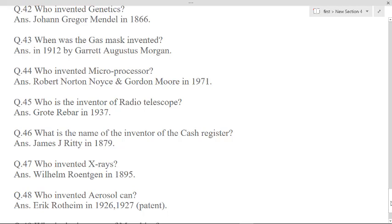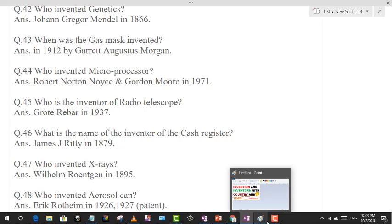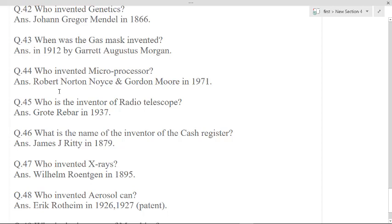Who is the inventor of radio telescope? Grote Reber in 1937. What is the inventor of the cash register? James J. Ritty in 1879.